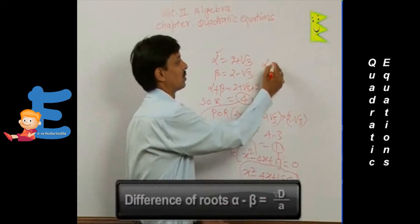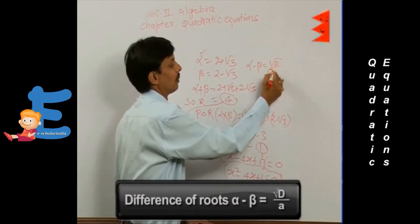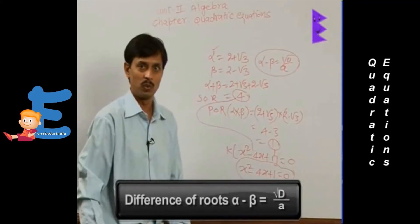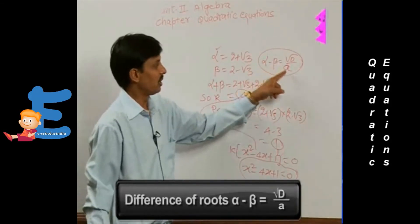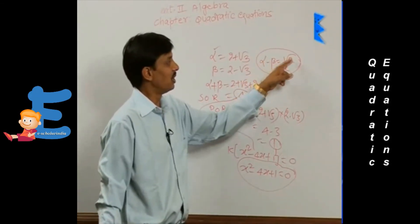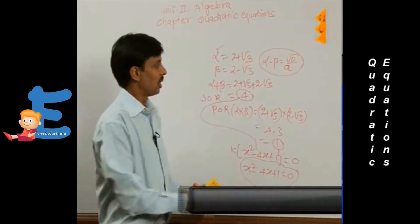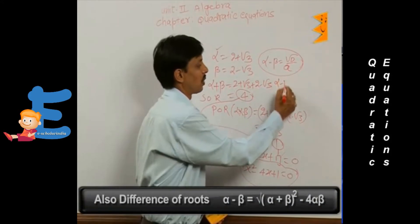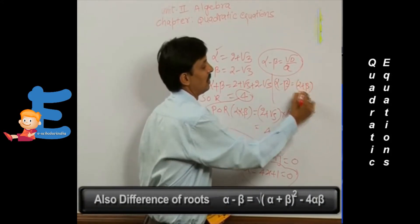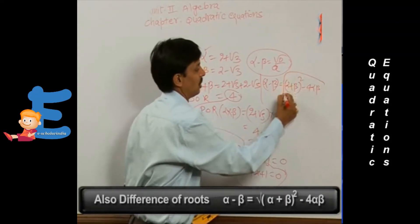There is one more important formula to find the difference of roots: alpha minus beta equals root D upon a, where a is the coefficient of x² and D is b² - 4ac. Sometimes we can also use the formula: alpha minus beta equals the square root of (alpha + beta)² - 4(alpha × beta).